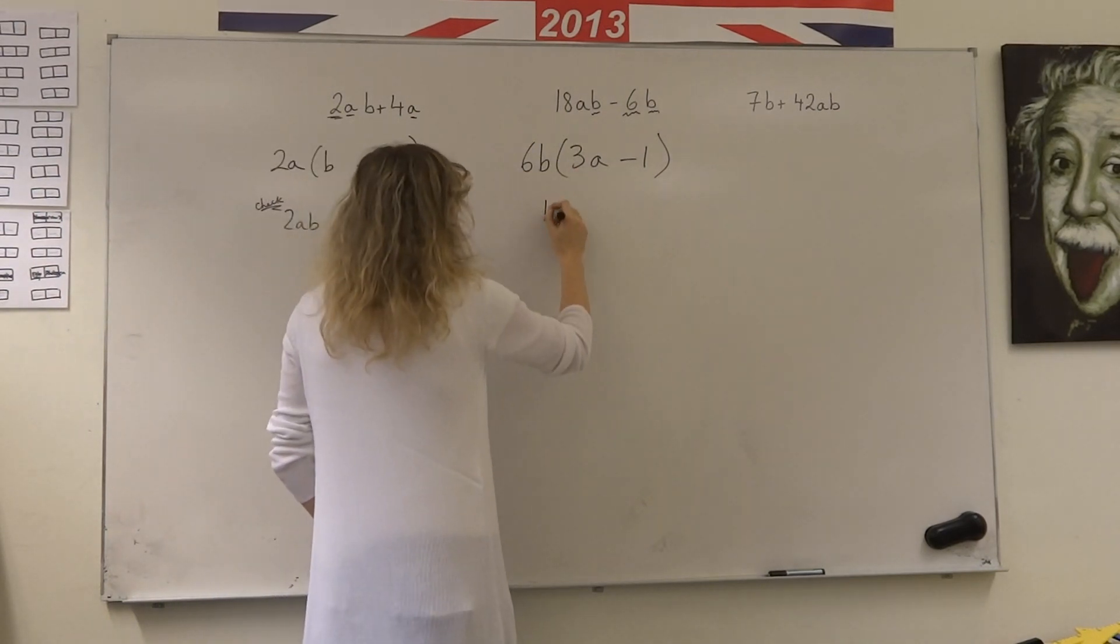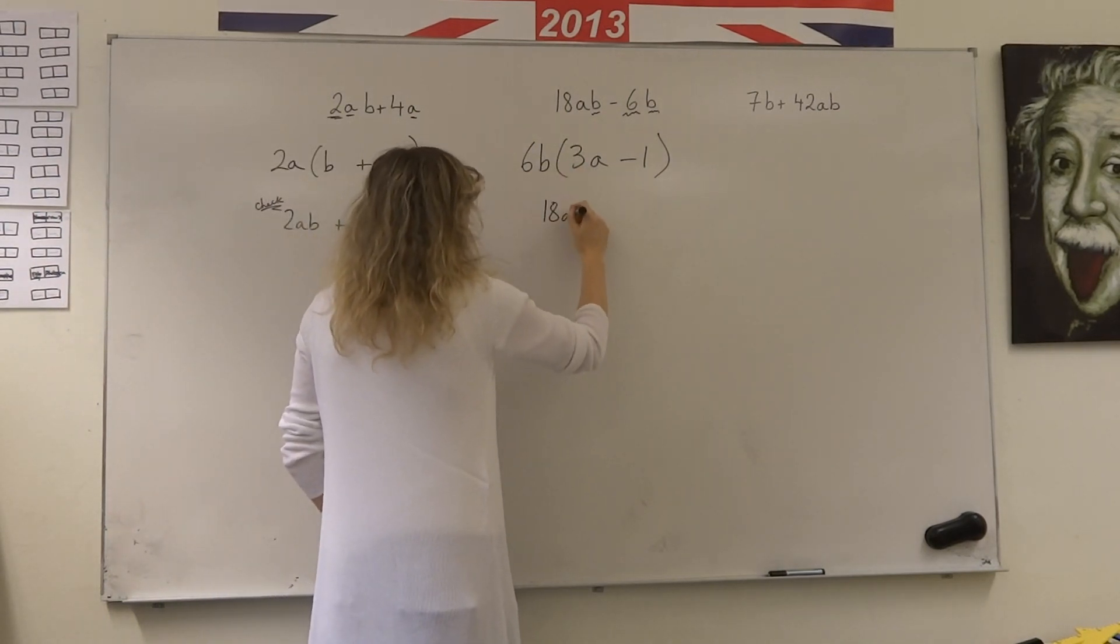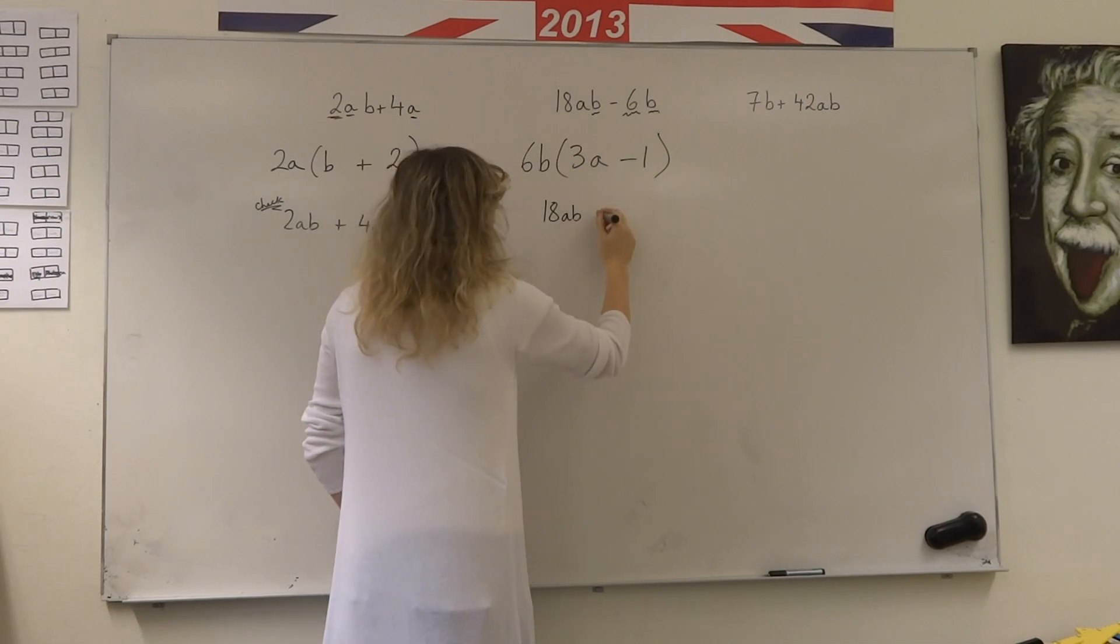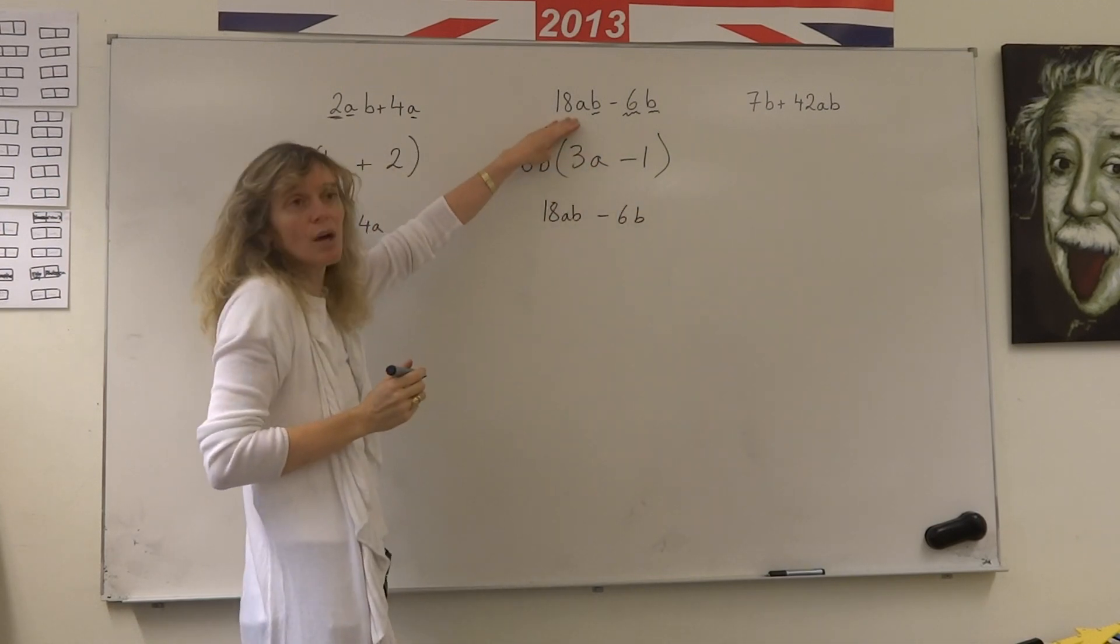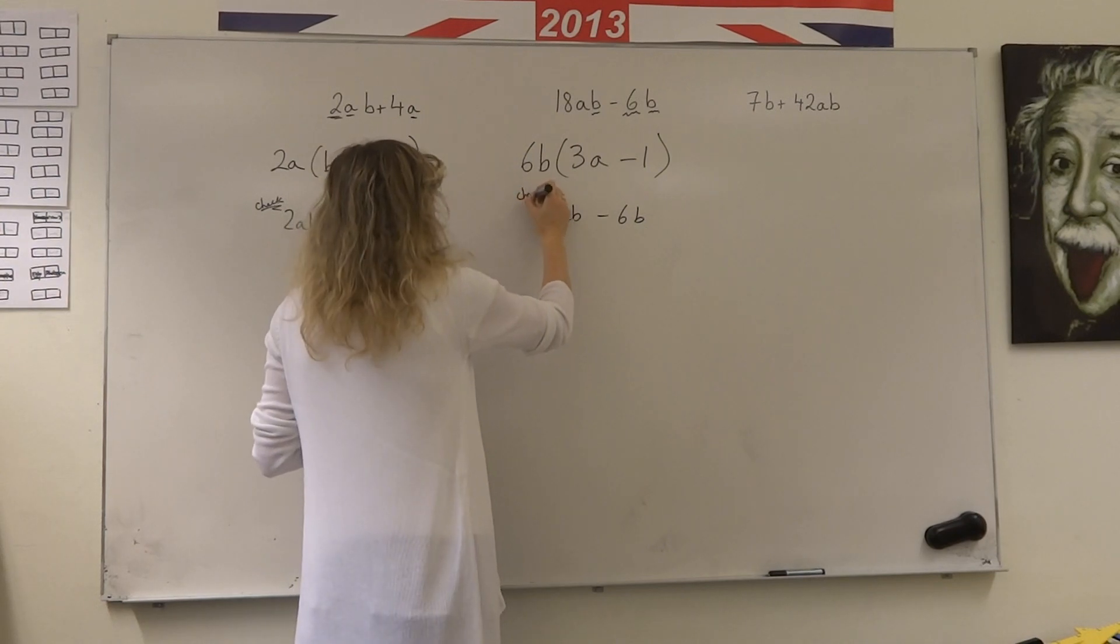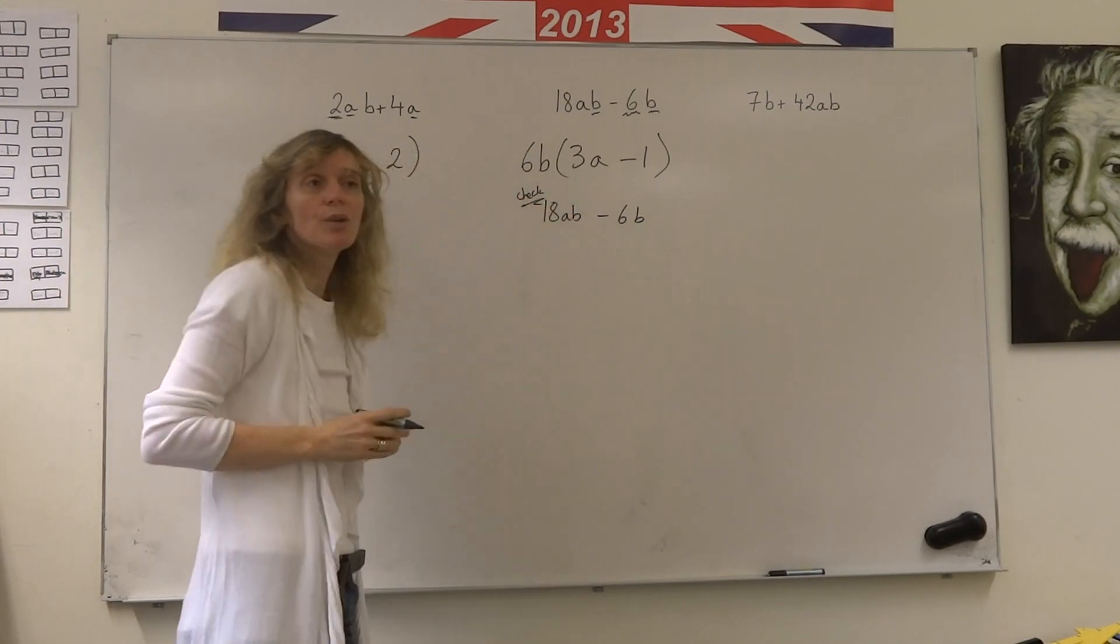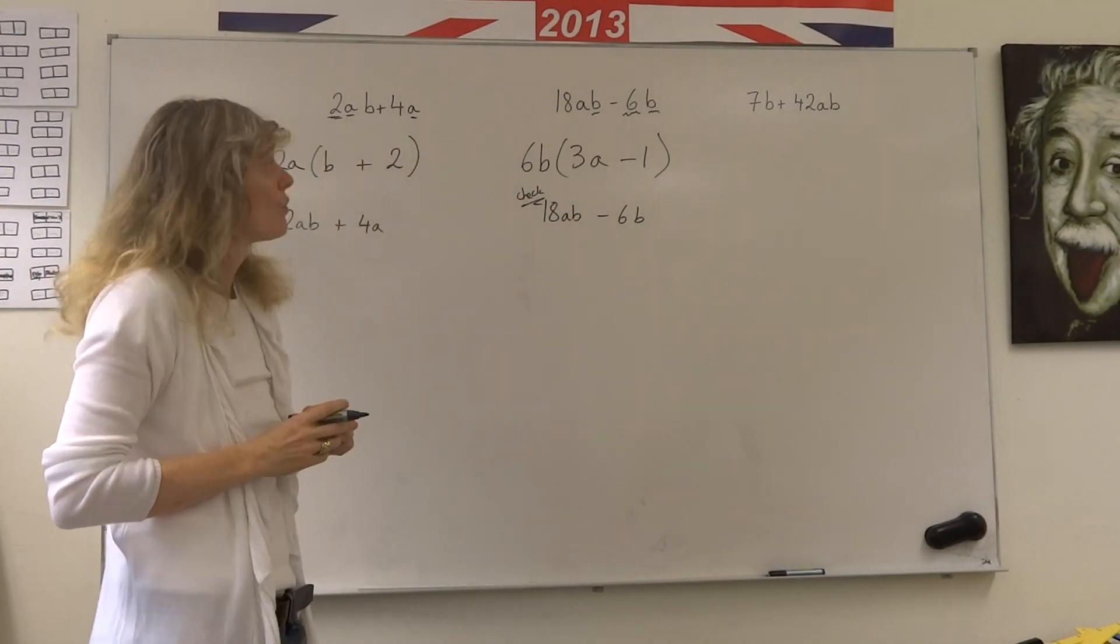6 times 3 is 18. A times B is AB. 6B times minus 1 would be minus 6B. Did we get back what we started with? Yes. So when you're factorising, always do the little check and you make sure that you've got the right answer.